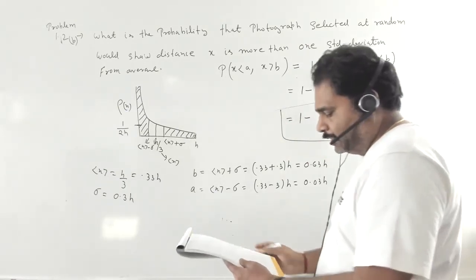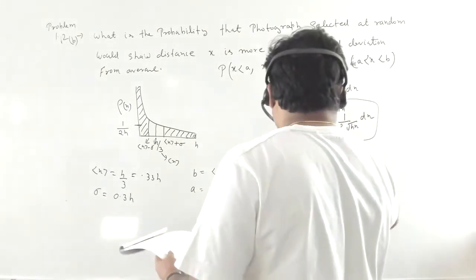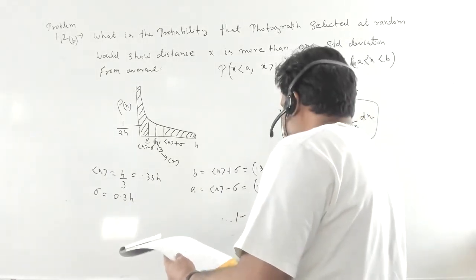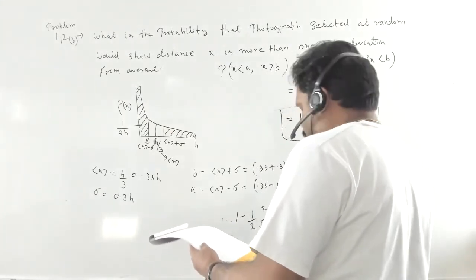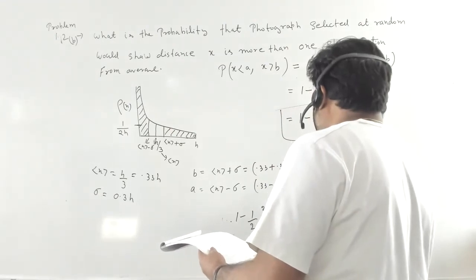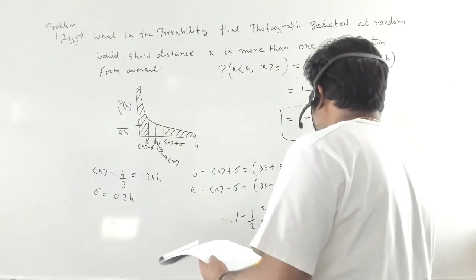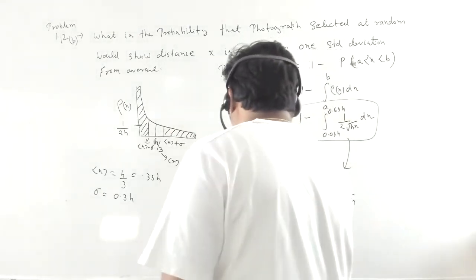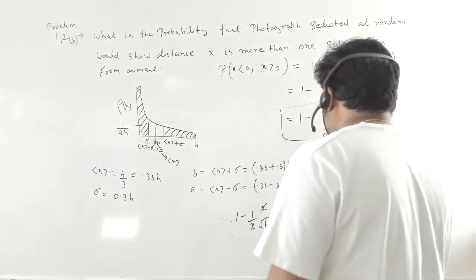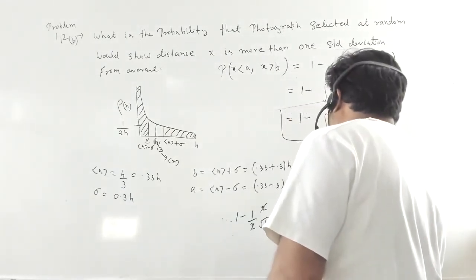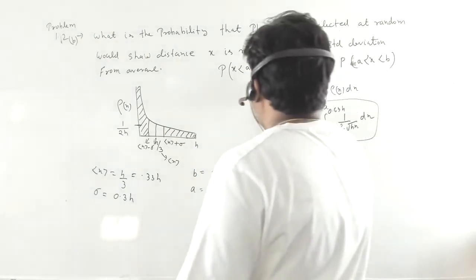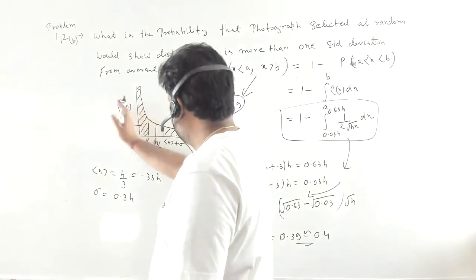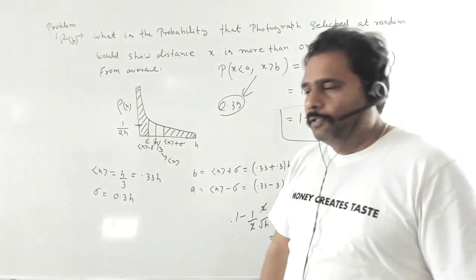Evaluating this integral, we get 1 − (1/(2√h)) · 2[√(0.63h) − √(0.03h)]. The factors of 2 cancel, and when we calculate the result numerically, the integral evaluates to approximately 0.61, giving a final probability of approximately 0.39. So the probability that the particle is more than one standard deviation from the average is about 0.39.